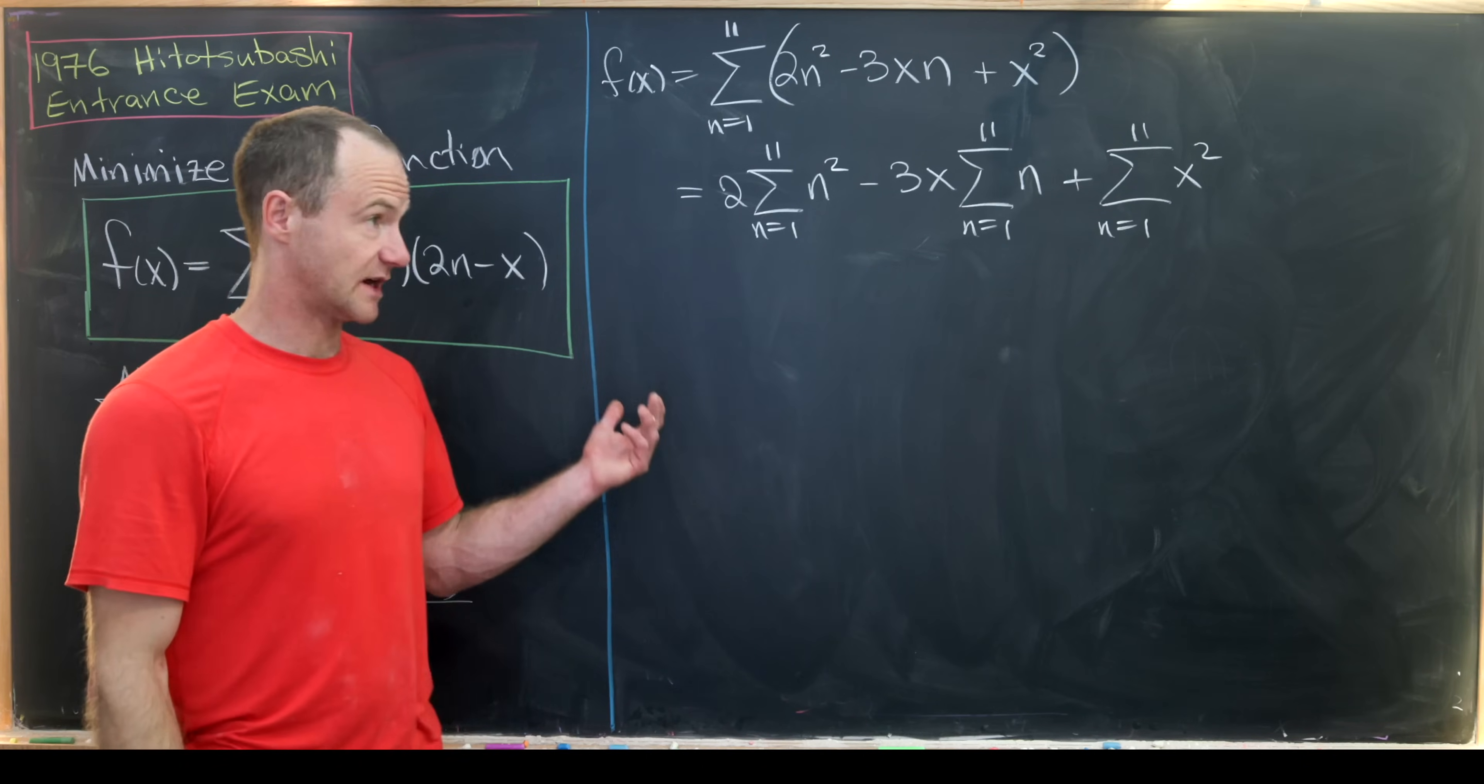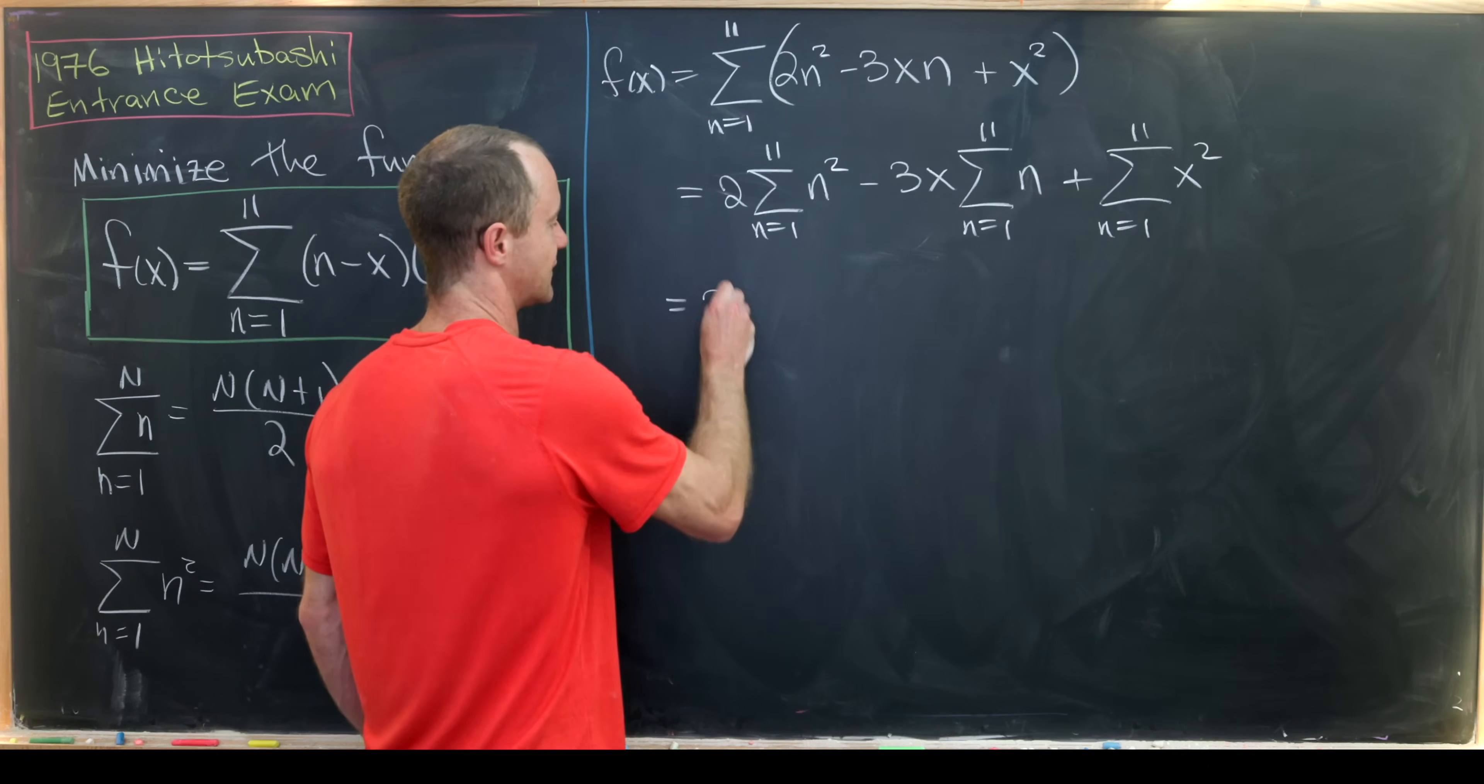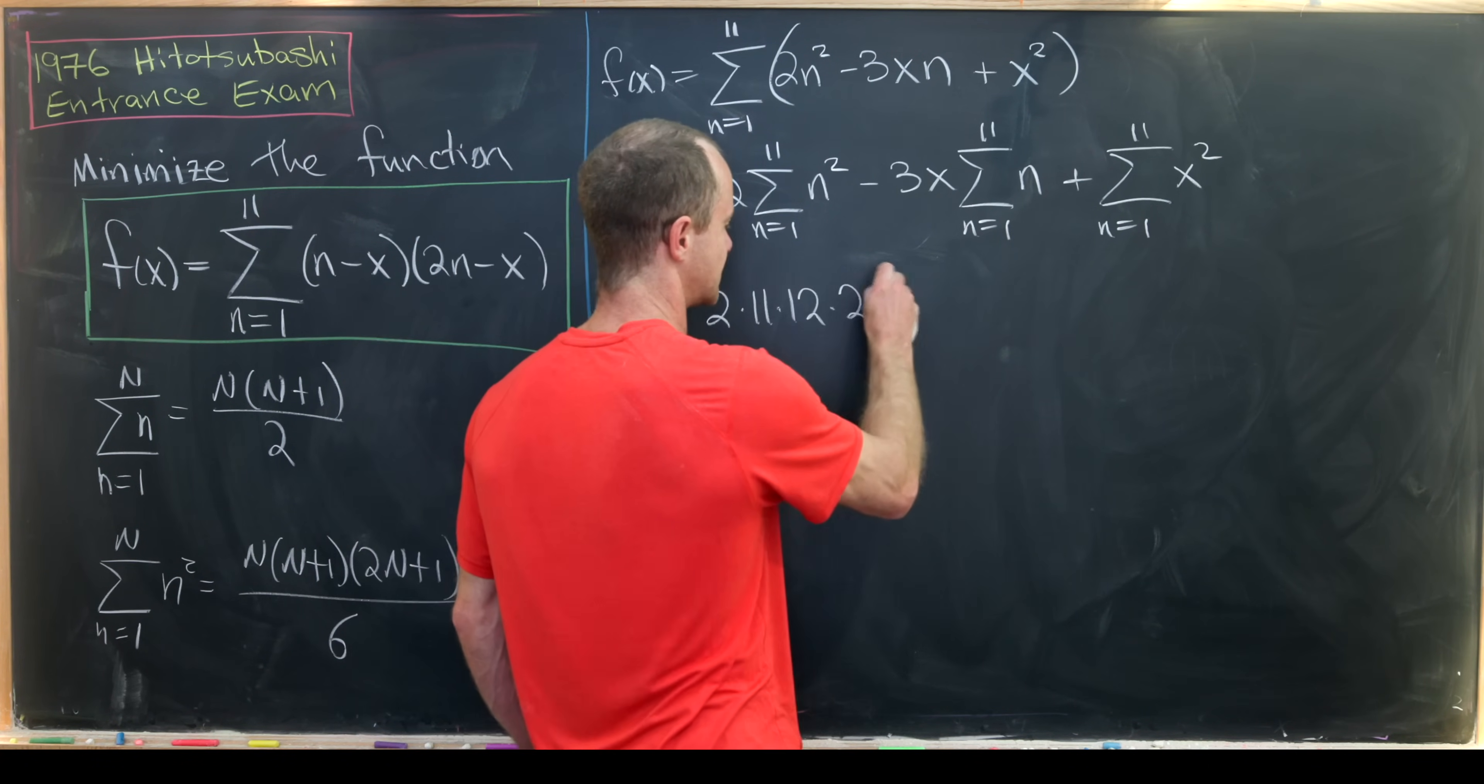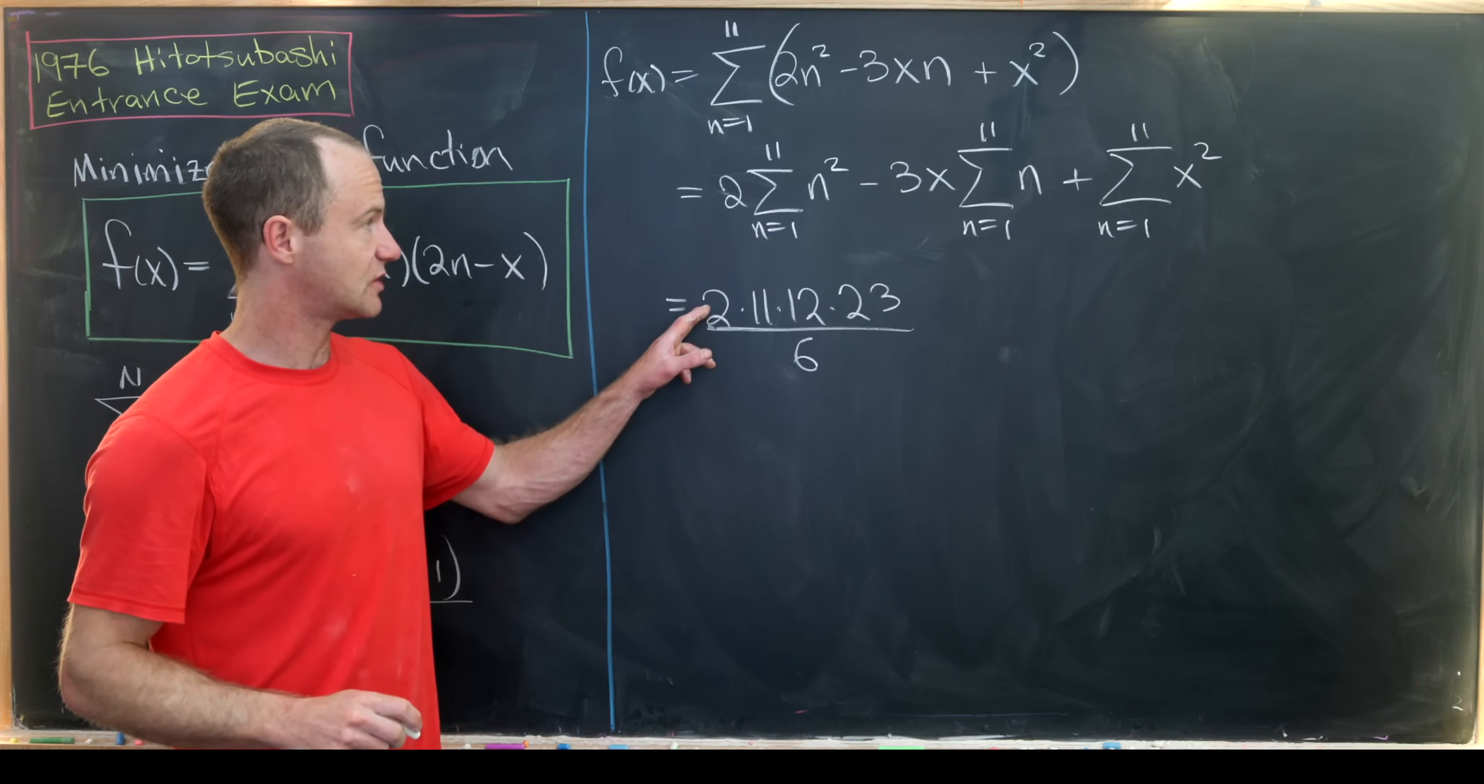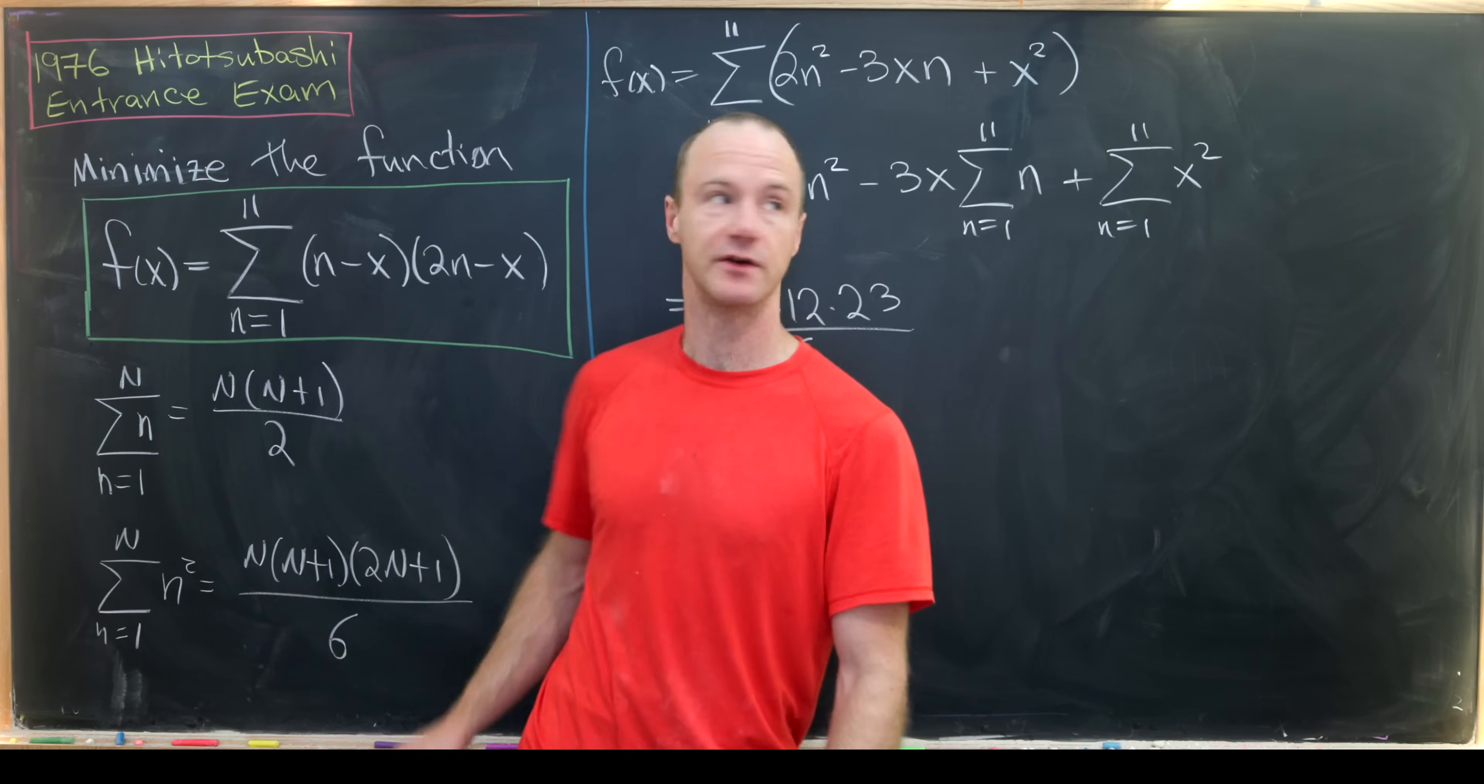Now we can apply these formulas. So this is going to give us 2 times 11 times 12 times 23 over 6. This 2 comes from the 2 that's out front. The rest of it comes from our closed form.